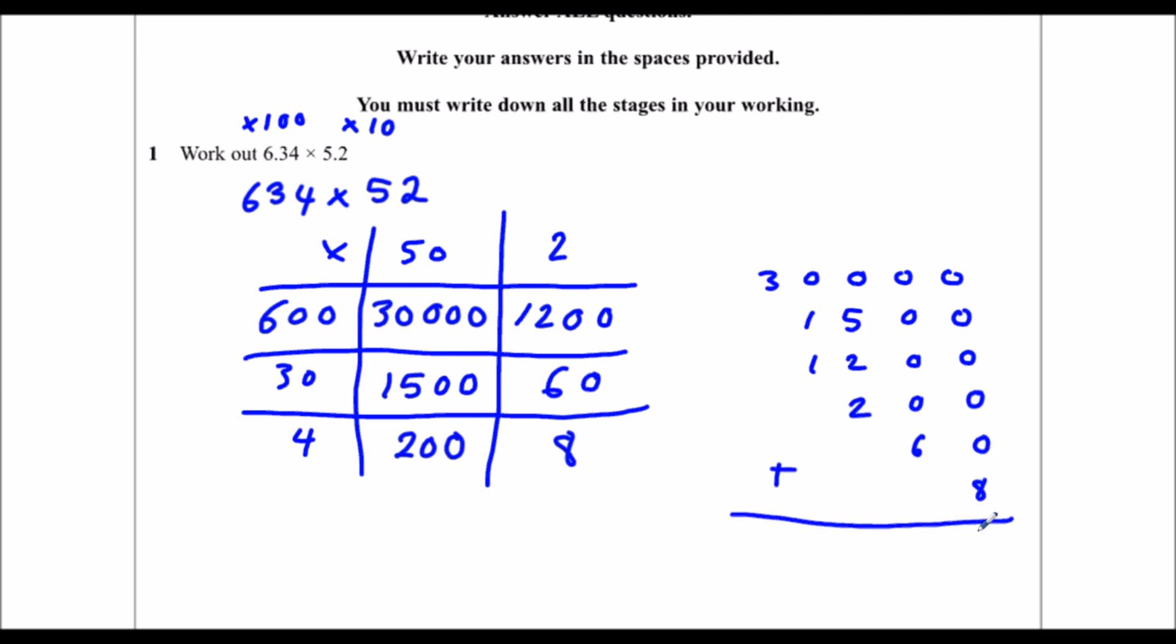In the ones I've got 8. In the tens, 6. In the hundreds, 9. 2,000 and 3 ten-thousands. So I've got 32,968.